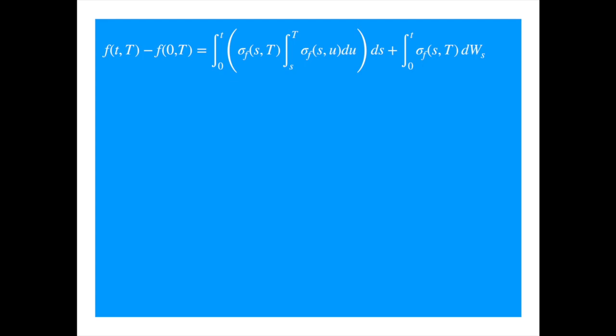Let's reproduce the HJM dynamics under the risk neutral measure and integrate to see how the solution looks. If the volatility is a deterministic function of time and maturity only, then from the properties of the Ito integral the instantaneous forward will be Gaussian. The Brownian increments are normally distributed, so the last term is a linear combination of normals with deterministic weights, the first term is deterministic, and so the whole expression is a linear transformation of normals — the result must be normal. A Gaussian process is the equivalent of normal when you move from random variables to random processes.